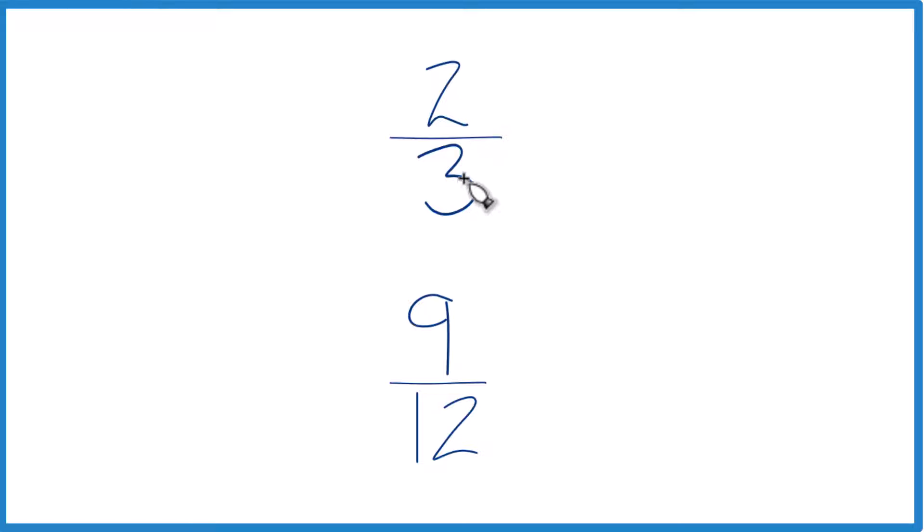But let's find a common factor, something that three and twelve both go into evenly. So we're looking for our common denominator here. Because if we have these the same, we just compare the numerators and we have our answer.